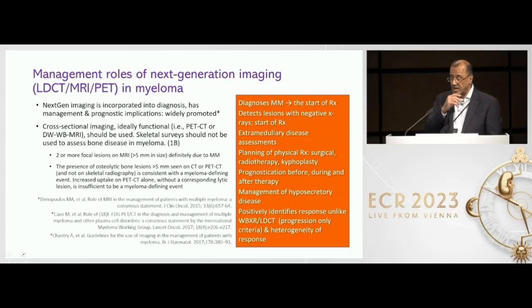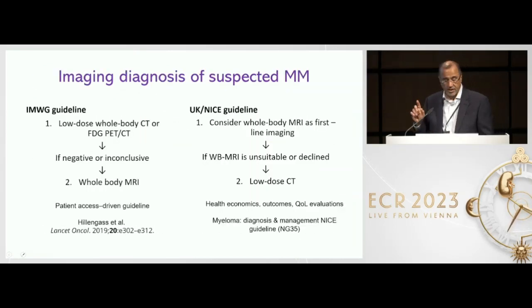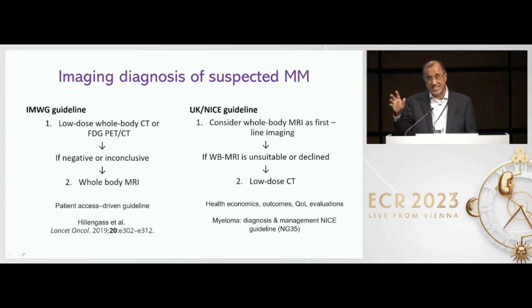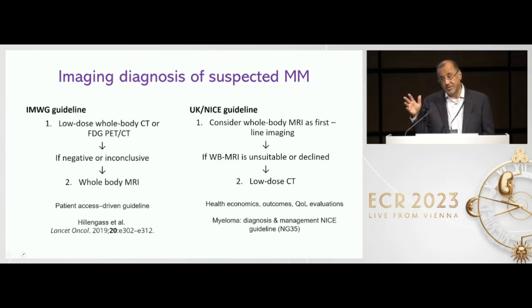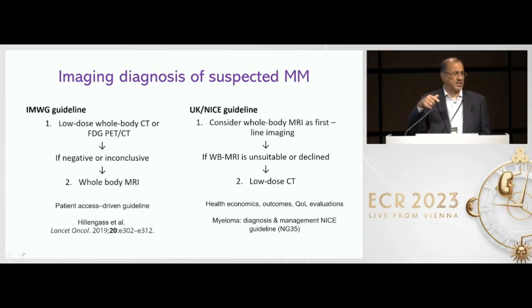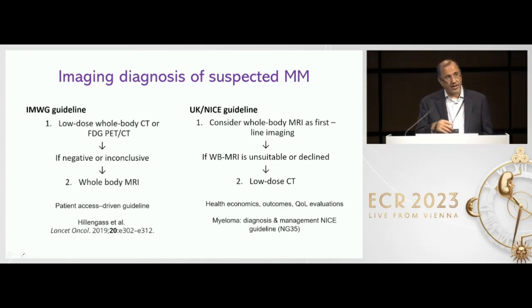There are three international management guidelines for multiple myeloma, and they all say do whole-body MRI. In the USA they say do PET scans or low-dose CT scans, and if you're unsure do a whole-body MRI — because whole-body MRI is much less available and more expensive in the USA than in Europe. In the UK we've gone the other way: whole-body MRI is available at 20-30 centres that routinely do it for multiple myeloma, so you do that first. If there's a contraindication, then you can think about doing low-dose CT.